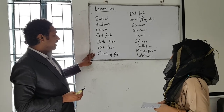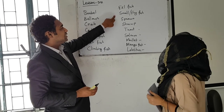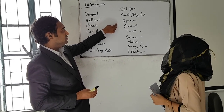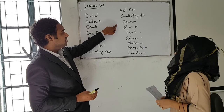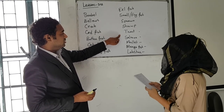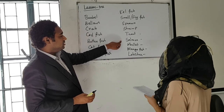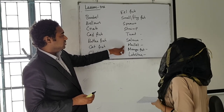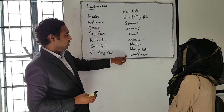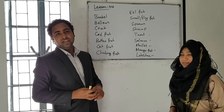That's a very popular one. The next one is a small fish. Shrimp. Trout. Salmon. Mango fish. Lobster. That's it from here. Thank you very much.